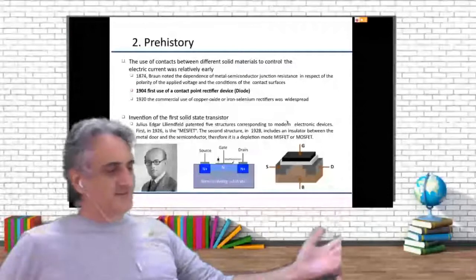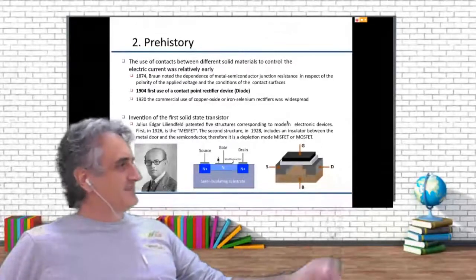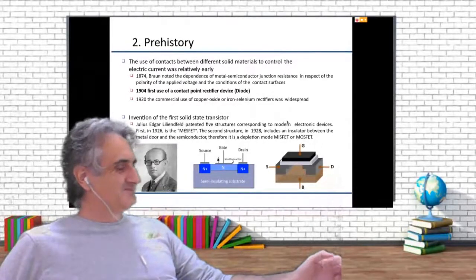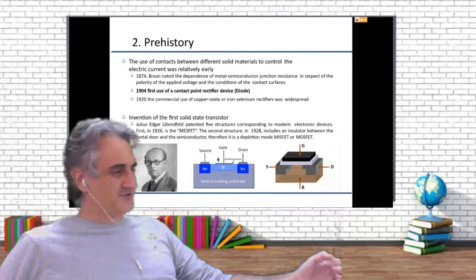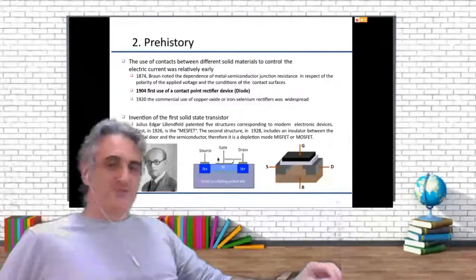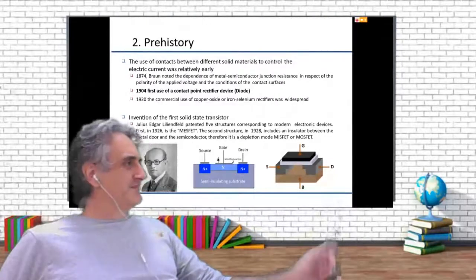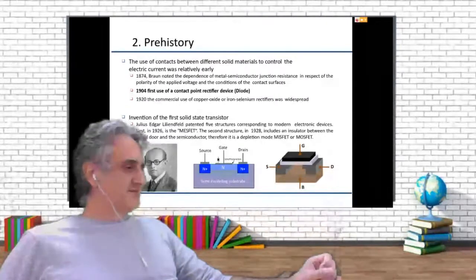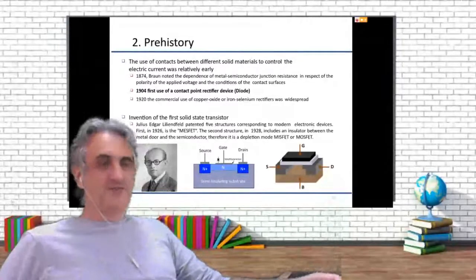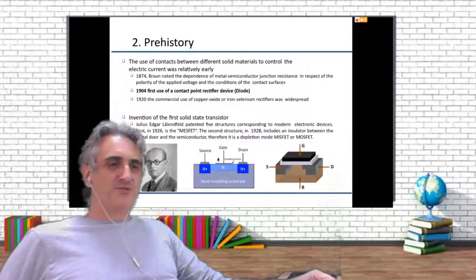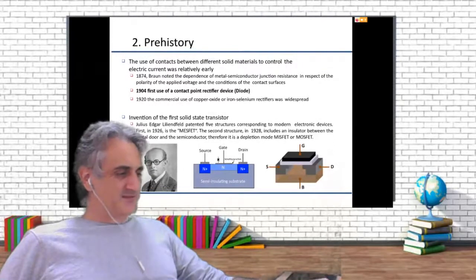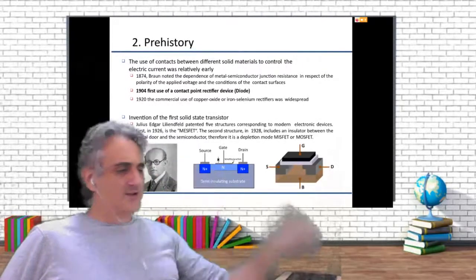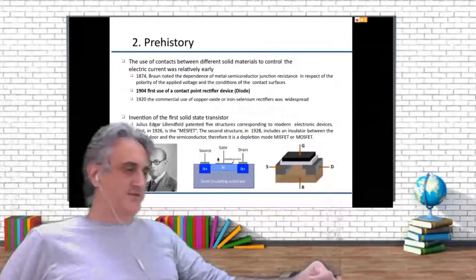Because of these problems, people were looking to get other things that could be used in a more profitable way. People were thinking to use things not based on the thermionic effect, because the thermionic effect needs high voltage to heat the filaments, which means you are wasting a lot of power just to heat the filament.